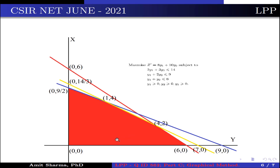This is the feasible region, because (0,0) satisfies the inequalities. The corner points of the feasible region are: (0,0), (6,0), (4,2), (1,4), and (0, 9/2). The point (1,4) is the intersection of lines 2y1 + 3y2 = 14 and y1 + 2y2 = 9, and (4,2) is the intersection of y1 + y2 = 6 and 2y1 + 3y2 = 14. The optimal value is obtained at the corner points.